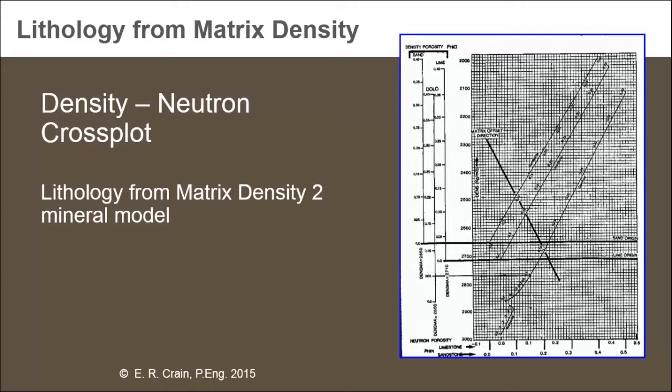It's based on the crossplot on the right-hand side of the screen. This is a crossplot of density or density porosity on the vertical axis, and neutron porosity on the horizontal axis. There are three diagonal lines on that graph labeled sandstone, limestone, and dolomite.